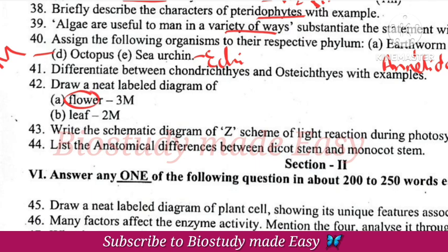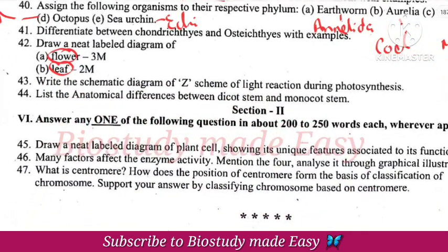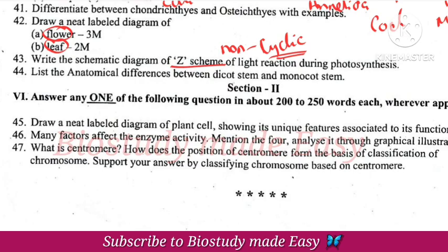Diagram of flower — draw the flower diagram and leaf diagram. Z-scheme of light reaction, also called non-cyclic photophosphorylation. Difference between dicot stem and monocot stem.